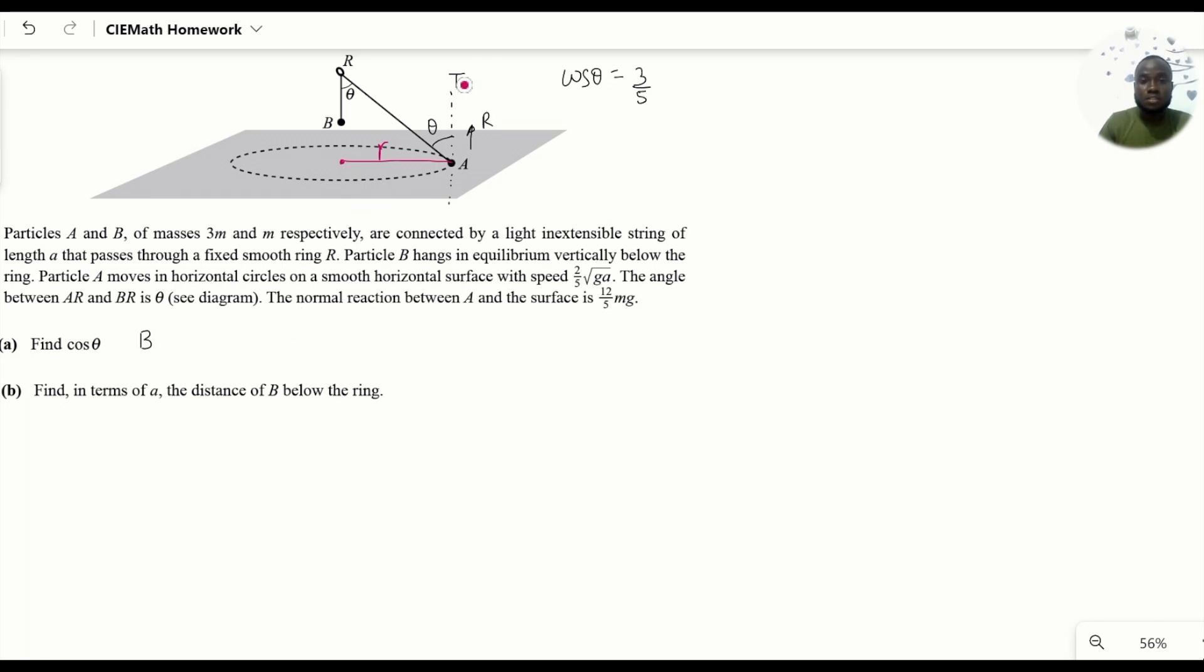Let's determine the component of T acting in that direction. If you do T times sine of this angle, that gives us what we need. Since cosine θ is 3/5, you are sure that sine θ will be 4/5. In that case, T sin θ should be equal to the mass of A times its linear speed squared over the radius of the circular path.